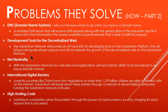They are trying to help the community and the developers that are going to build their network. For net neutrality, with the Substratum network all websites and applications will have equal ability to be broadcast in a fair manner. For international digital barriers, countries like China have strict regulations on what citizens can access — this company will break down those barriers through a network of decentralized computers. Finally, high hosting costs are solved through cryptocurrency, by only charging for each request that is processed.